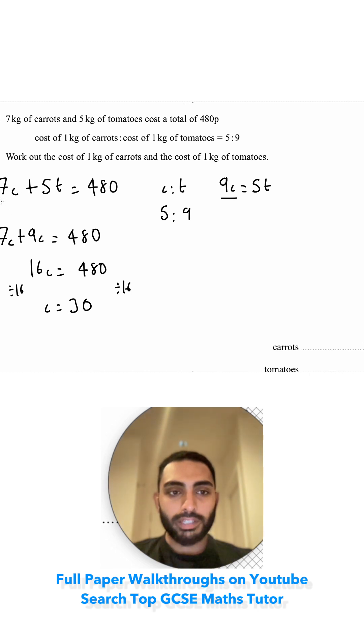I'm going to substitute that back into my equation. I'll substitute it into here. So I've got 7 lots of c, which is 30, plus 5 lots of the tomatoes, which is equal to 480.